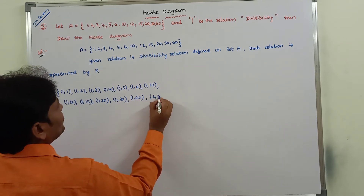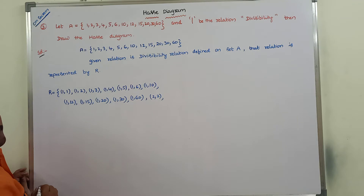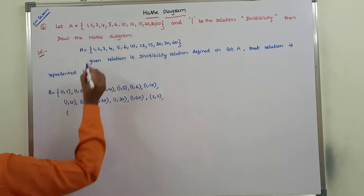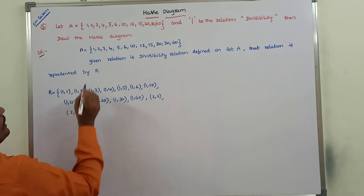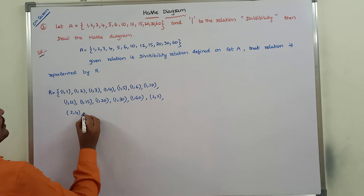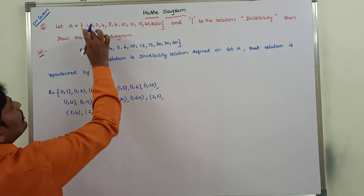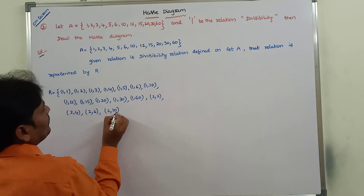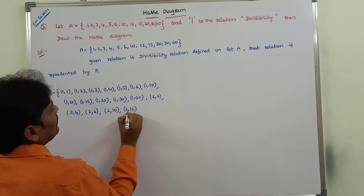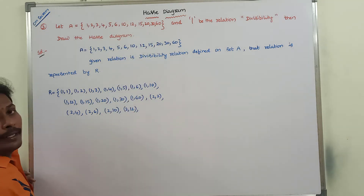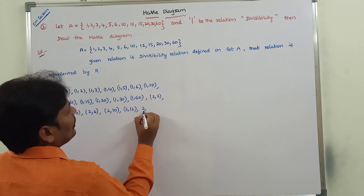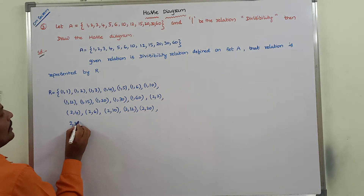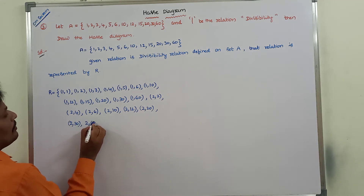Next, 2 divides 2. 2 does not divide 3, so we do not take that ordered pair. 2 divides 4. 2 does not divide 5, so that ordered pair cannot be taken. 2 divides 6. 2 divides 10. 2 divides 12. 2 does not divide 15, so that ordered pair cannot be taken. 2 divides 20, 2 divides 30, and 2 divides 60.